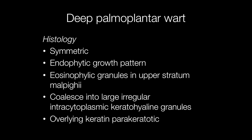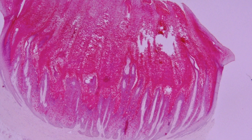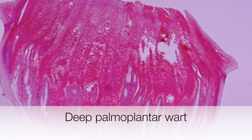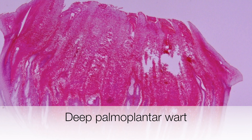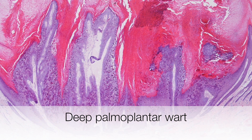Histologically, deep palmoplantar warts are symmetrical. They have an endophytic growth pattern, and there are characteristic eosinophilic granules in the upper stratum malpigii that coalesce into larger irregular intracytoplasmic keratohyaline granules, and the overlying keratin shows parakeratosis. At low power you can see the endophytic growth pattern and the rather domed anthill-like appearance at the surface of the lesion, along with a very thick layer of keratin and parakeratin.